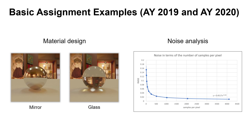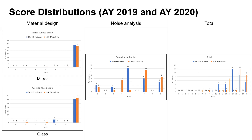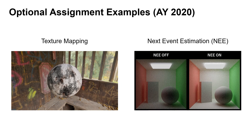Noise analysis is an essential task for understanding the path tracing algorithm. The students were assigned to generate images with different numbers of samples per pixel and analyze the relationship between sampling and noise. These charts illustrate the distributions of the students' scores. The students worked on both assignments well, as expected, and half of the students scored 90% or more points on the total scores.